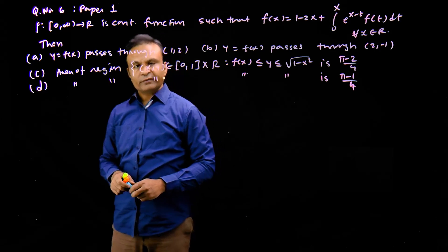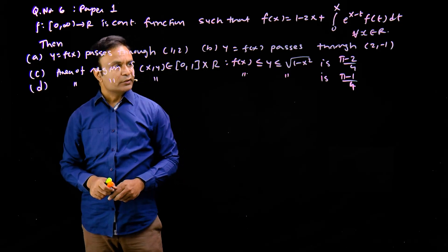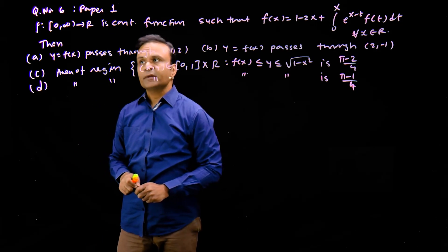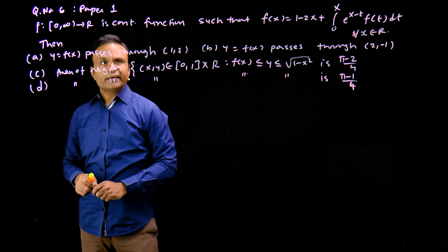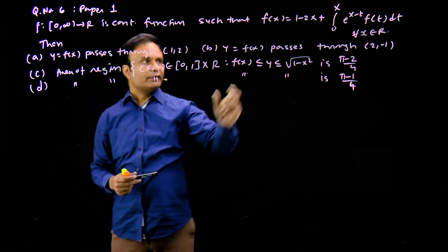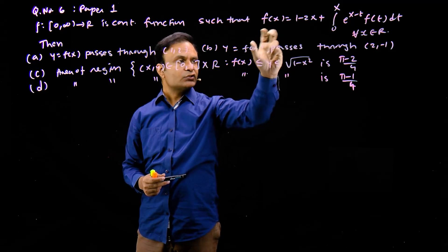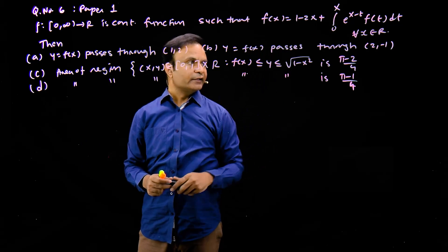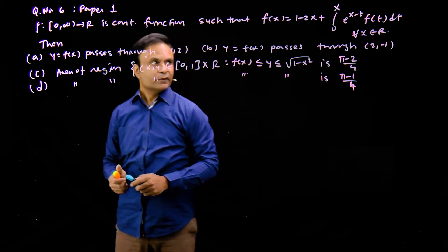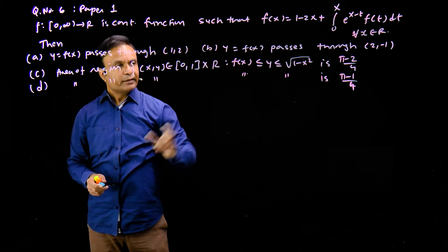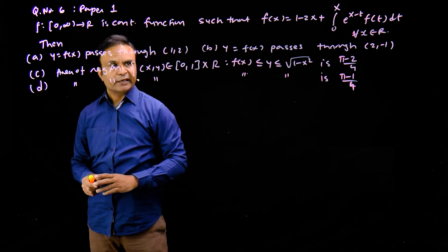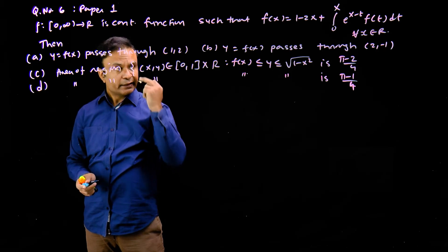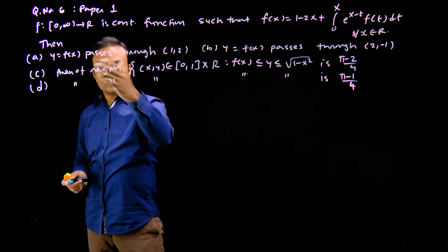Question No. 6 of Paper 1 — a more than one option correct type of question. You have a function given which satisfies a certain relation. We need to find this function, and after finding it, we have to check these options.